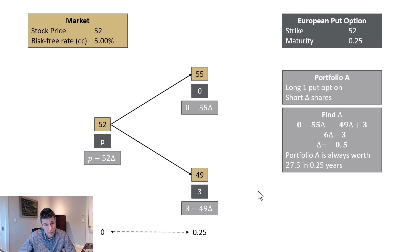Portfolio A: whatever we do, if the stock goes to 55 or down to 49, that portfolio is always worth 27 and 1/2. Think of it this way. You're short negative 1/2 a share, which is actually like being long half a share, which means if the stock goes up, it's worth 0 plus half of 55 or 27 and 1/2. Stock goes down, it's worth 3 plus half of 49 or 27 and 1/2. So that's our portfolio A. It's always worth the same, 27 and 1/2, no matter what happens.